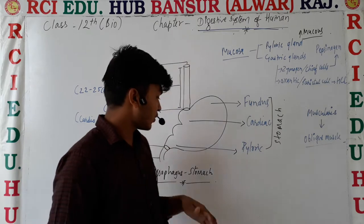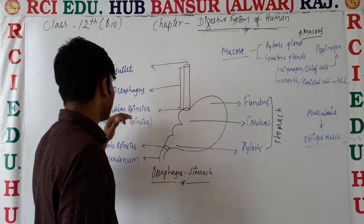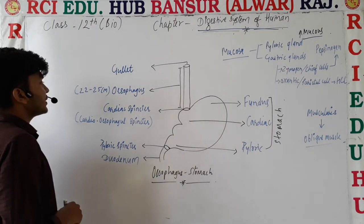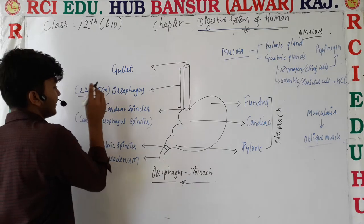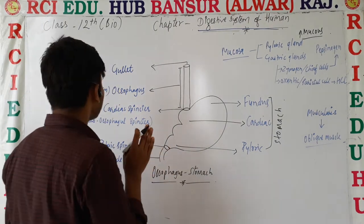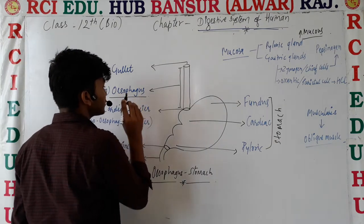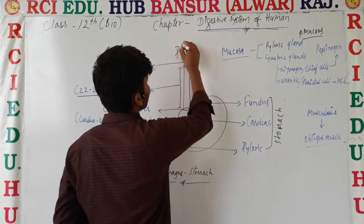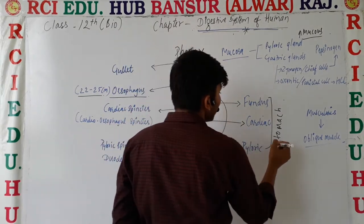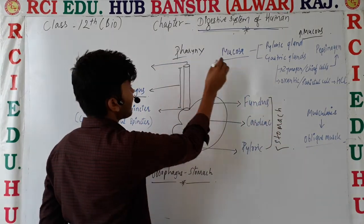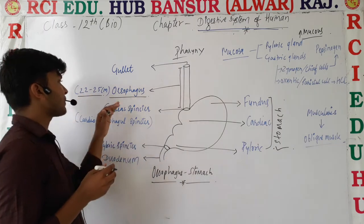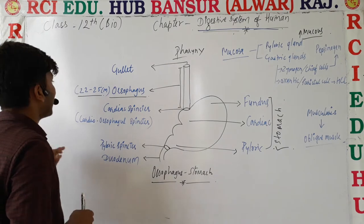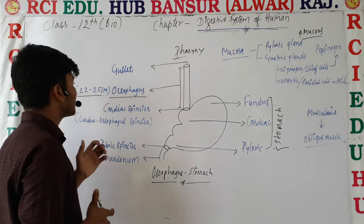You will know that the opening of the alimentary canal is the mouth. The esophagus is a long tubular structure which connects the pharynx and stomach. It is almost 22–25 cm in length.